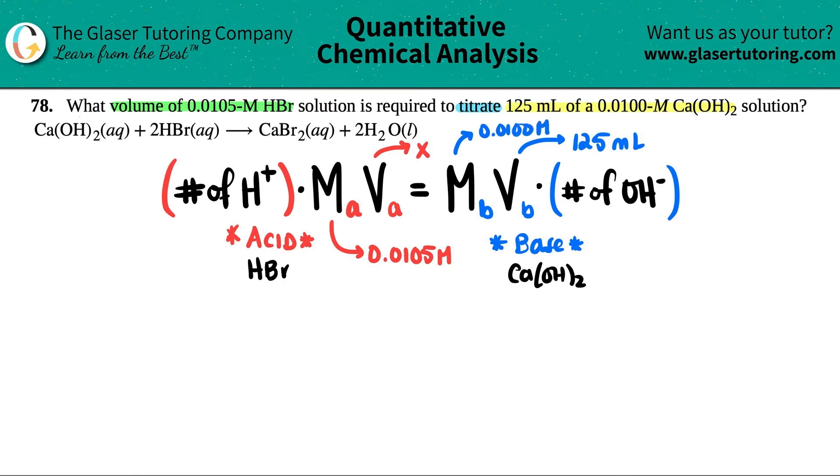Now let's just say how many H pluses we have and how many OH minuses we have. In HBr, do you see how you only have one H in HBr? So in this case, I only have one H plus. And then coming over to Ca(OH)₂, here's my OH, but I have two of them. So I have two OH minuses. So this would be multiplied by one. And this side would be multiplied by two.